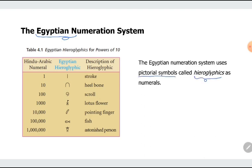These would be pictorial symbols like we see here on the left. So for the Hindu-Arabic numeral one, they use a stroke, a vertical line, and then for the ten, they use a heel bone. The heel bone symbol, here is their symbol for scroll, which is equivalent to 100, and then the lotus flower, equivalent to a thousand, the pointing finger equivalent to ten thousand, the fish equivalent to a hundred thousand, and the astonished person equivalent to a million.